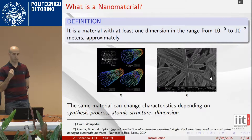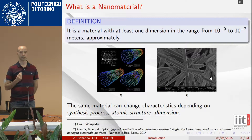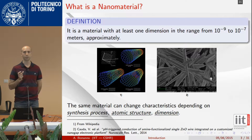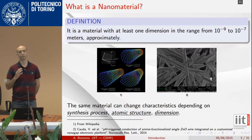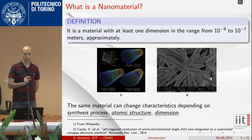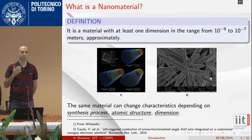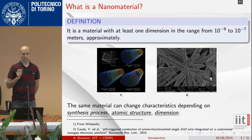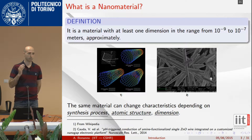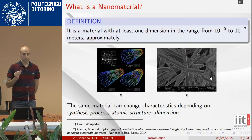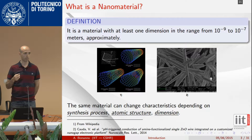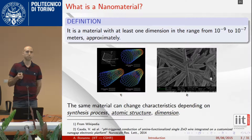I begin with what is a nanomaterial. It is a material that has at least one dimension in the nanometer scale — so it could be the length or at least the diameter of the nanomaterial that is some tenths of a nanometer or at least hundreds of nanometers. Each nanomaterial has its own characteristics that can change depending on the synthesis process, depending also on the atomic structure — if we think about the carbon nanotube — but also of course depending on the dimension of the nanomaterial.